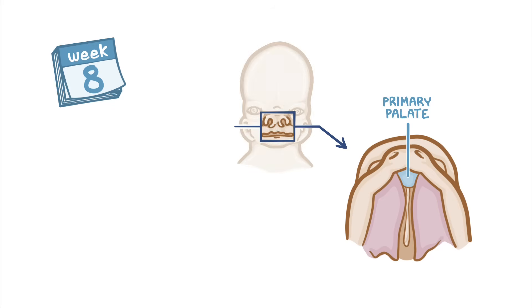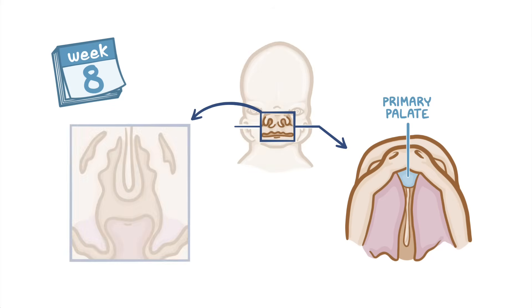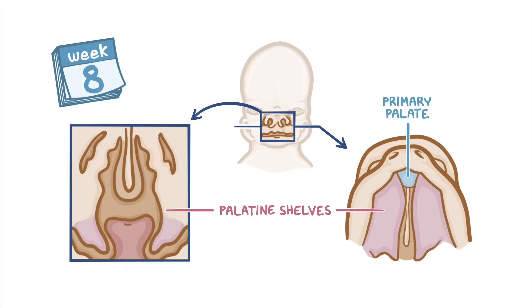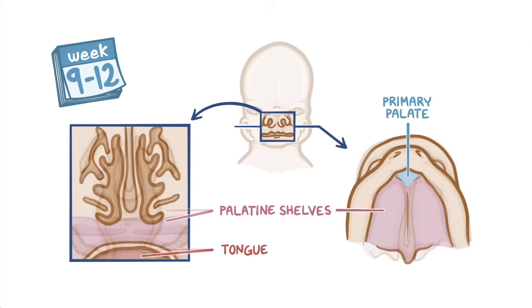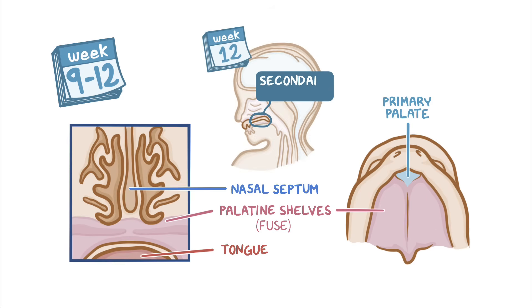The maxillary processes then develop a pair of shelf-like processes called palatine shelves, which grow vertically downwards on either side of the developing tongue. As the mandibular process grows and expands, the tongue descends down, creating room for the palatine shelves to elevate into a horizontal position, and then grow medially until they fuse with each other and with the primary palate in front. At the same time, the mesoderm and ectoderm of the frontonasal and intermaxillary segments grow downwards in the midline to form the nasal septum, which fuses with the secondary palate.